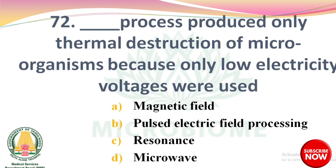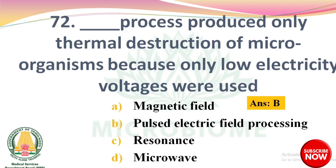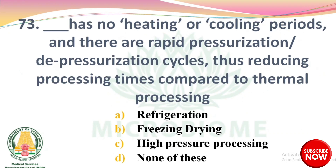Next question: dash process produces only thermal destruction of microorganisms because only low electricity voltages are used. Options: magnetic field, pulsed electric field processing, resonance, microwave. The right answer is Option B: pulsed electric field processing. Next question: dash has no heating or cooling periods and there are rapid pressurization-depressurization cycles, thus reducing processing times compared to thermal processing. Options: refrigeration, freezing drying, high pressure processing, none of these. The right answer is Option C: high pressure processing.